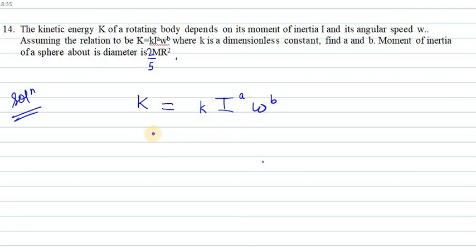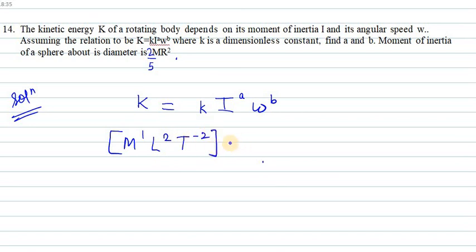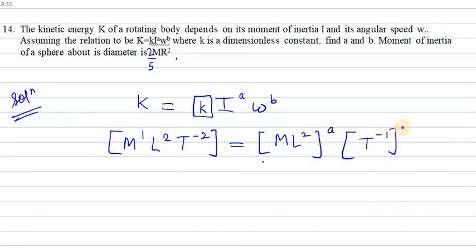We need to find the quantities a and b. The dimensions of kinetic energy are M¹L²T⁻². Since k is dimensionless it equals 1. So we have ML² raised to power a for moment of inertia, and for omega we have T⁻¹ raised to power b.